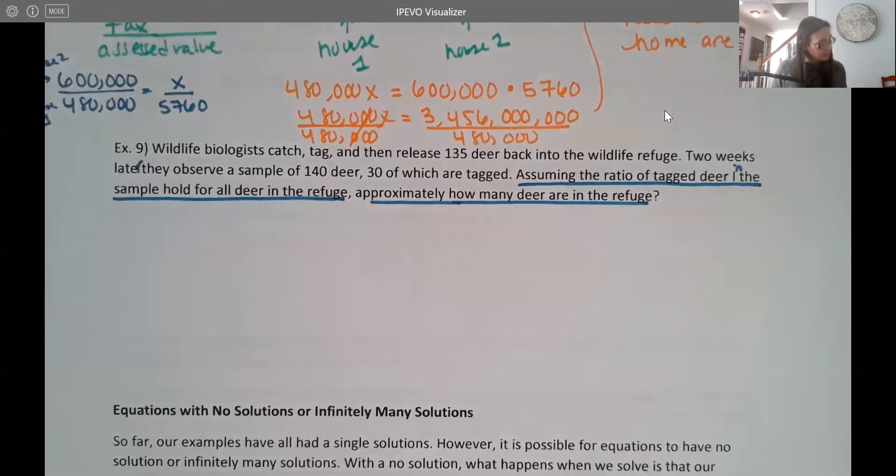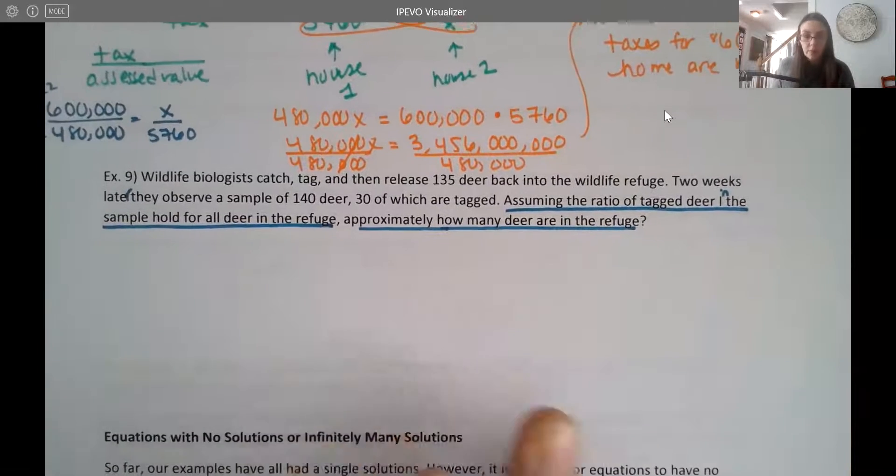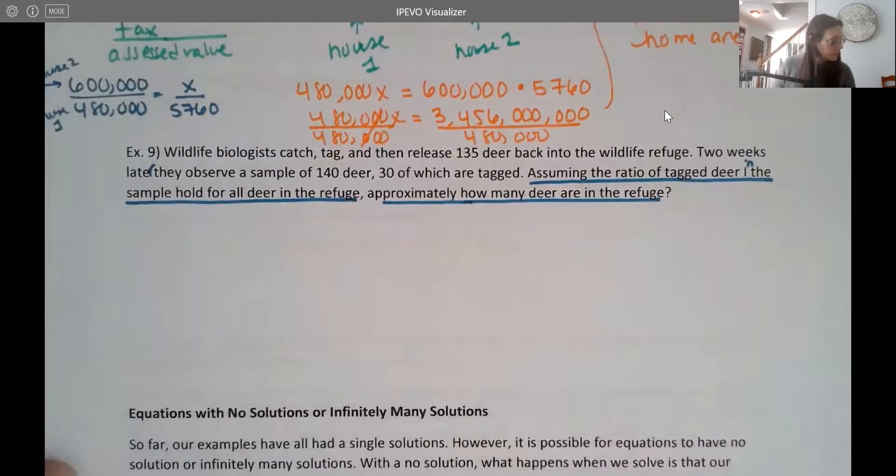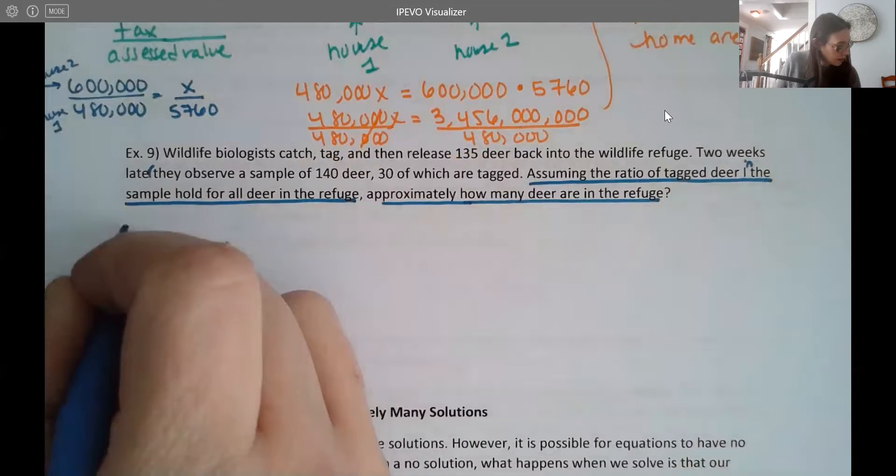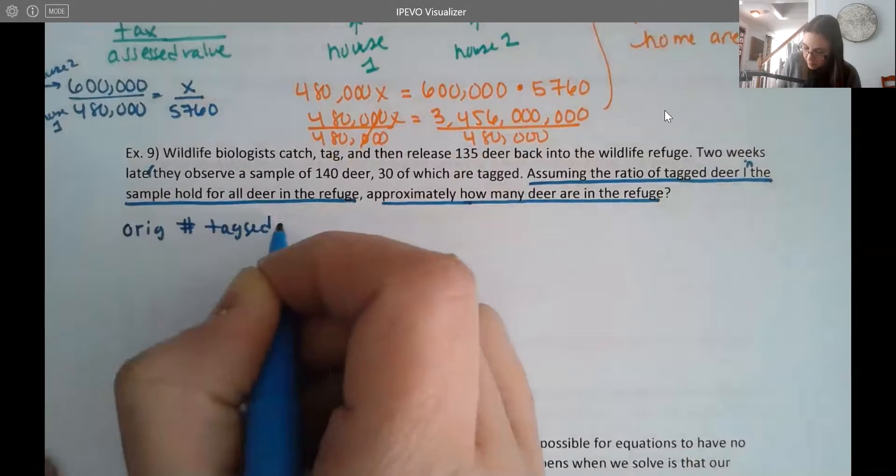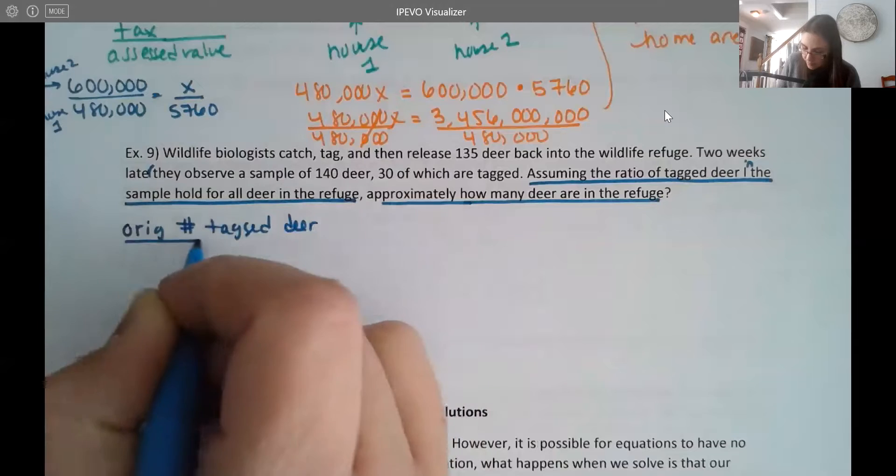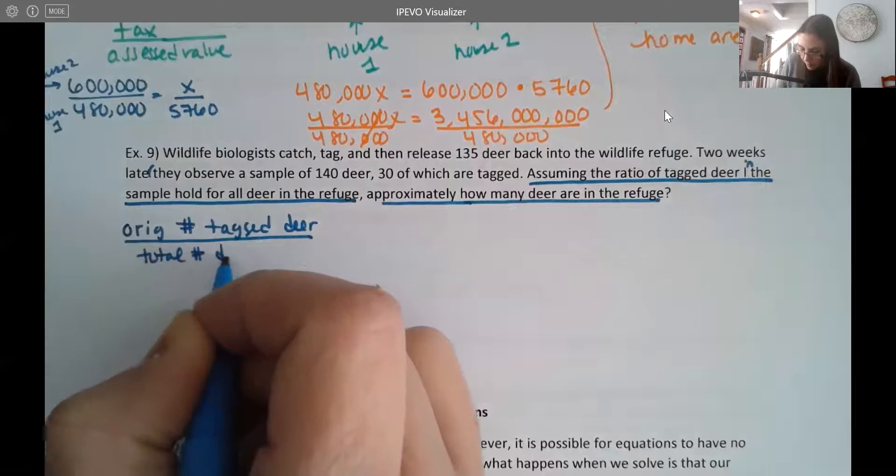So let's look at this example. And we can kind of see how to set it up. Again, there's more than one way to set it up. All right. So the way your book does it is they set up the ratio like this. So they're comparing here the original number of tagged deer to the total number of deer.